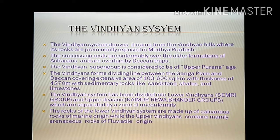The Vindhyan system has been divided into lower Vindhyan, which comprises the Semri Group, and upper Vindhyan, which comprises the Kaimur, Rewa, and Bhandir groups. All are separated by a zone of unconformity. The rocks of the lower Vindhyan system are made up of calcareous rocks of marine origin, while the upper Vindhyans are made up of arenaceous rocks of fluviatile origin.